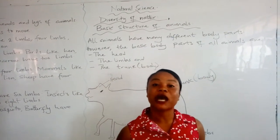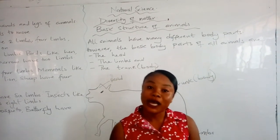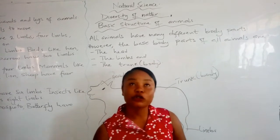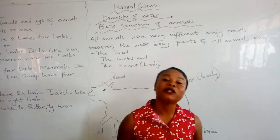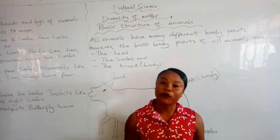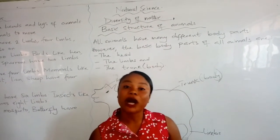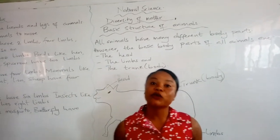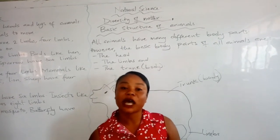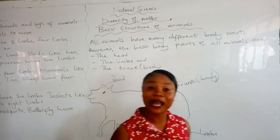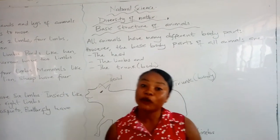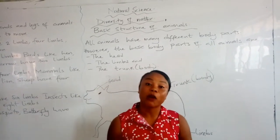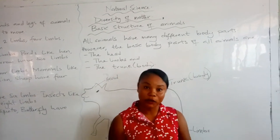Examples of domestic animals are dog, cats, and hen. We also talked about animals that live in the forest — they are called wild animals. Examples of these animals are tiger, lion, cheetah, and hyena. All these animals are wild animals.